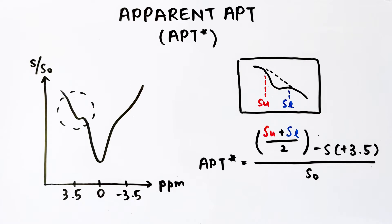This method minimizes MT and NOE effects. However, it is more suitable for high field strength experiments as a narrow APT dip is needed for a linear approximation.